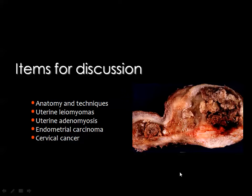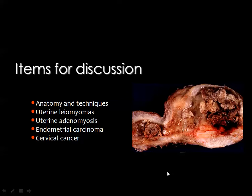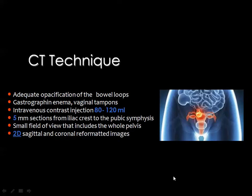These are the items for discussion: I will provide some of the anatomy and techniques of examination, then we will talk about uterine leiomyomas, uterine adenomyosis, endometrial carcinoma, and cervical cancer. In two other separate lectures I will deal with ovarian pathology and the rest of the organs, including lesions of endovaginal pathology.